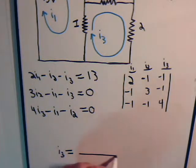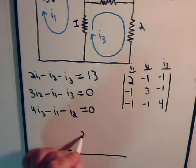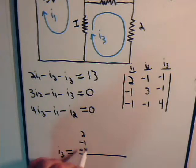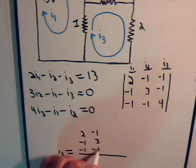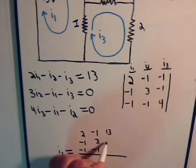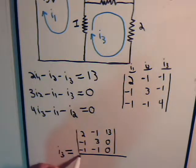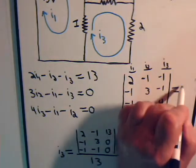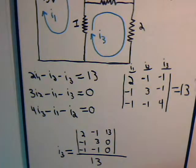I3 will be equal to - this stays the same - so we have 2, -1, -1, -1, 3, -1, and then we have this column of numbers: 13, 0, 0, and it's divided by 13. That was the numerical value of this 3 by 3 determinant.